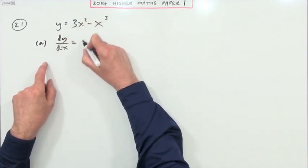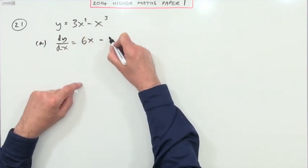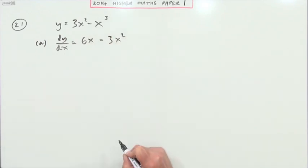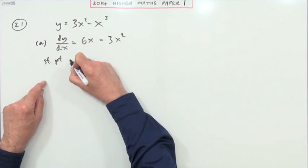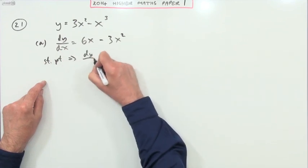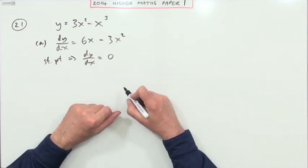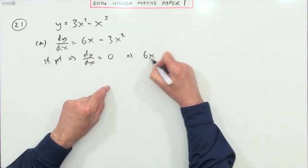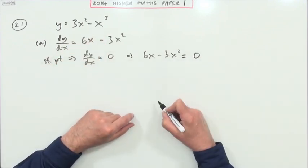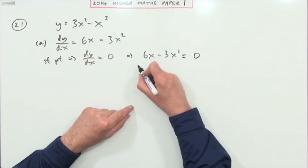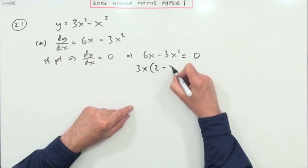dy/dx: multiply by the power — two threes are six, take one off the power, that drops to power one. Multiply by the power — that's just three, take one off, the power drops to two. For stationary points, the derivative must equal zero, so we have the equation six x minus three x squared equals zero.